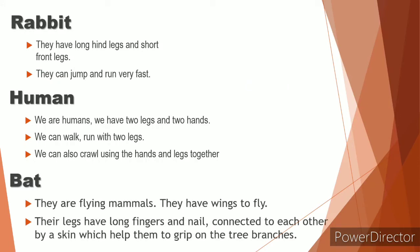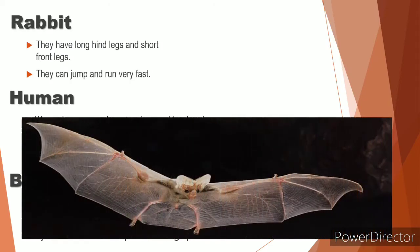Next one is the bat. They are flying mammals. They are the mammals that can fly. Their hands and legs are joined by a thin skin. And they have strong fingers and nails which help them to grip on the branches of a tree. See? They have wings all over their body. This is actually a thin skin.